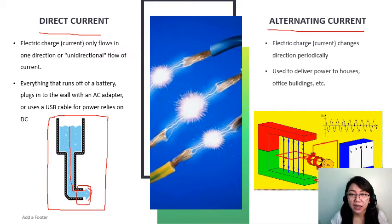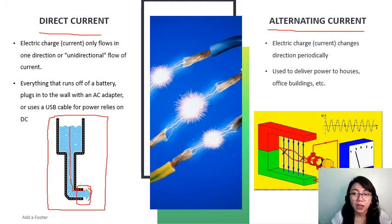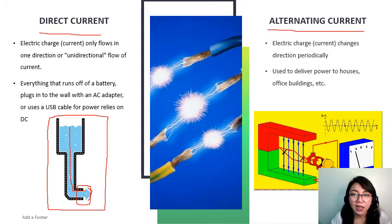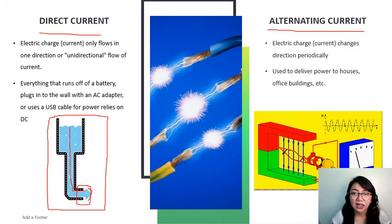Alternating current, on the other hand, is where the electric current changes direction periodically. It's used to deliver power to houses, office buildings, and so on. In our home wiring, the current is not just one-way — it's a loop. A loop of wire is spun inside a magnetic field, which induces a current along the wire. The rotation of the wire can come from any number of means — wind turbine, steam, flowing water, and so on. Because the wire spins and enters a different magnetic polarity periodically, the voltage and current alternate on the wire.